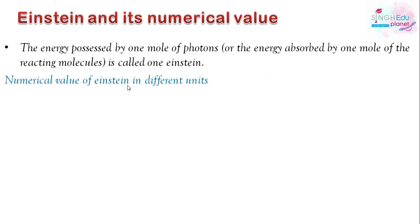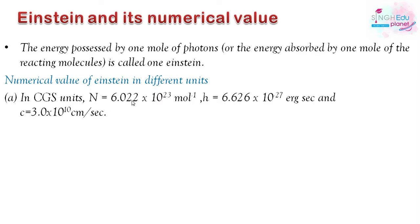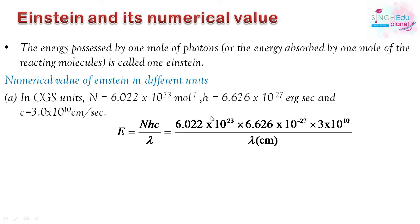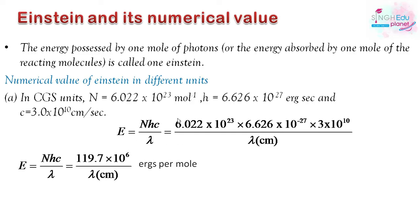Let's see the numerical values of Einstein in different units. In CGS units: N = 6.022 × 10²³, H = 6.626 × 10⁻²⁷ erg·seconds, and C = 3 × 10¹⁰ cm/s. Putting these into E = NHc/λ, with λ in centimeters, we get E = 119.7 × 10⁶ ergs per mole.